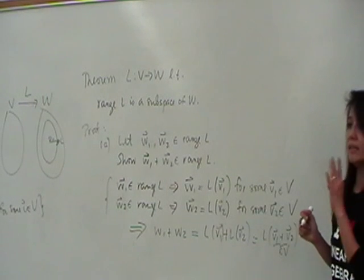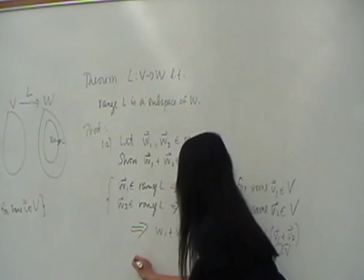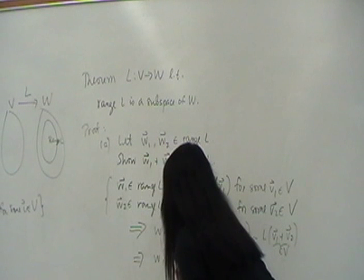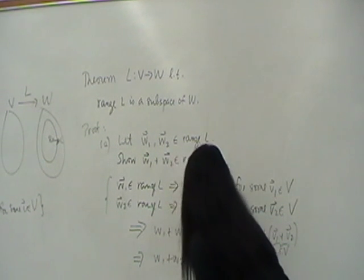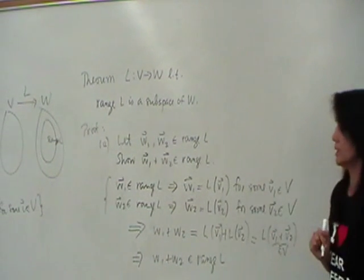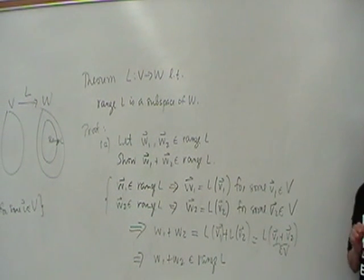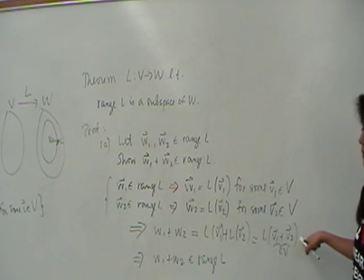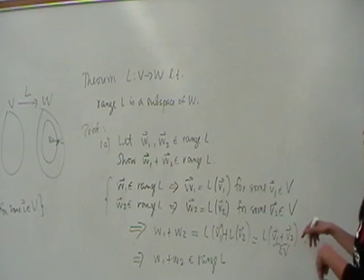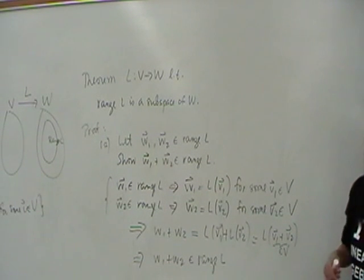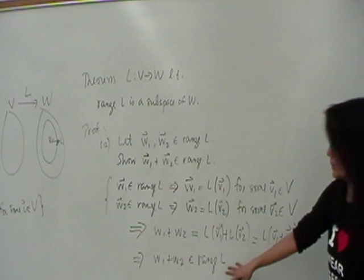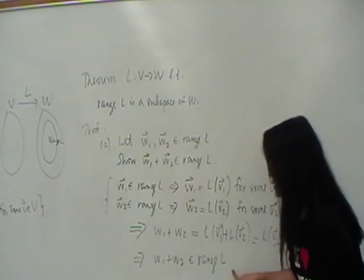So from here to here, what have we shown? That we were able to write W one plus W two as an L of something in V. Isn't this in V? V one plus V two is in V. Therefore, because we were able to exhibit this, that there is something in V whose image under L is that. The conclusion is that W one plus W two is in the range of L. We're not done. Don't get carried away yet.